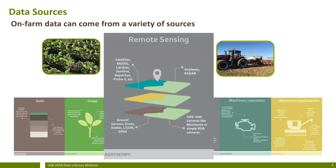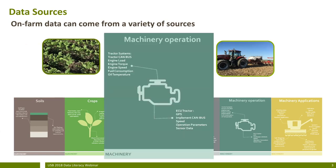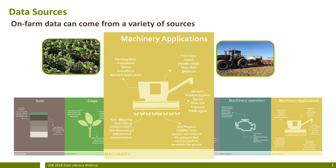Remote sensing is more complex. We have four different sources: satellites with different types of sensors, airplanes, ground sensors like GreenSeeker, LiCor, and SPAD, and drones with different sensor types — cameras, multispectral, or simple RGB cameras. On the machinery side, the operation side covers anything related to machine performance, fuel consumption, or speed sensor data. The applications side includes seeding rate, prescription, yield monitoring information, anything connected to soil mapping and electrical activity, and different equipment like sprayers with flow rate, pressure, and prescription data.